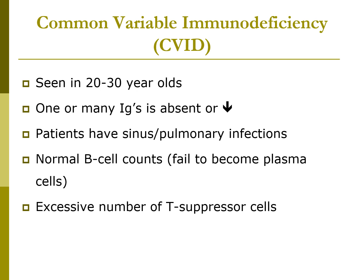Their B cell counts are normal, but they fail to become plasma cells. This is related to an excessive number of T regulator cells. The treatment is immunoglobulin replacement therapy.